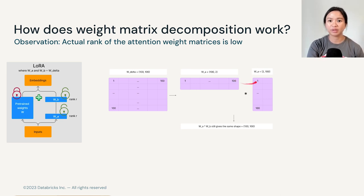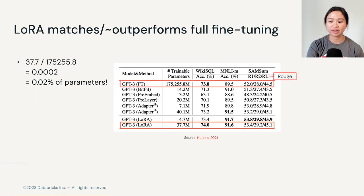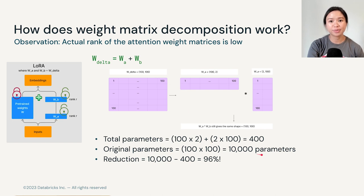When we multiply these two matrices together, they still give us the same shape as 100 times 100, which is the same shape as W_delta. This is really important because we can then concatenate the results of these matrices with the original pre-trained weights and pass that to the subsequent layer. This decomposition method dramatically reduces the number of parameters. The total parameters are 100×2 plus 2×100, which is 400. But the original W_delta matrix has 10,000 parameters altogether, so this brings us to a 96% reduction in the number of trainable parameters.